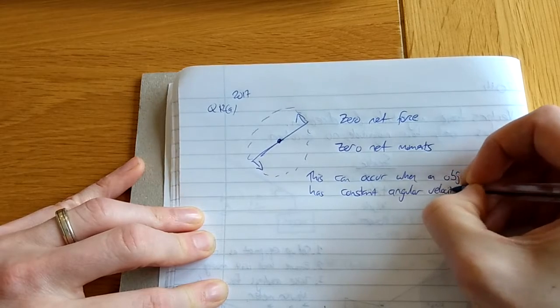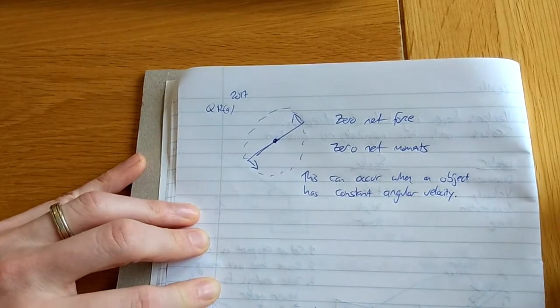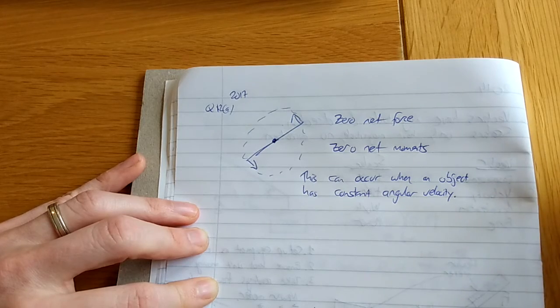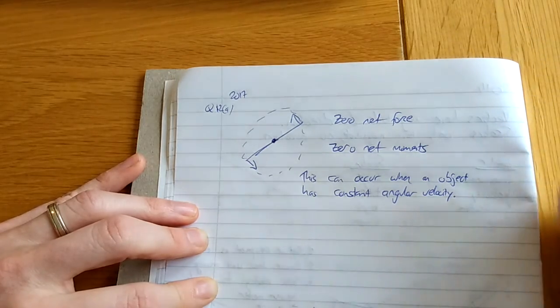The Earth, for example, is spinning at a constant angular velocity. It's in equilibrium. There's nothing changing about it. It's just constantly in its angular velocity.